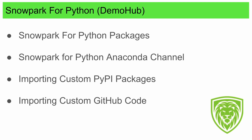Hopefully this was helpful. A recap of what we've seen: Snowpark for Python packages — how to view and query them within the UI; how to explore the Anaconda channel that has all the curated packages with parity to your Snowflake instance, so you avoid dependency hell; how to import custom packages from PyPI with the caveat that they must be native Python; and how to do the same for GitHub code or any code in your organization — zip it up, use session.add_import, and get the job done.